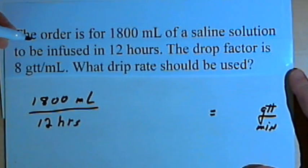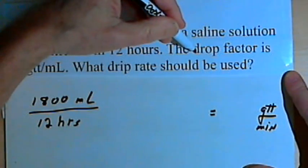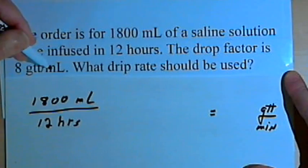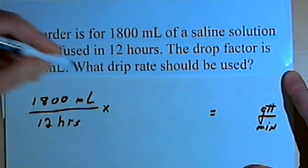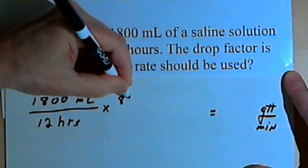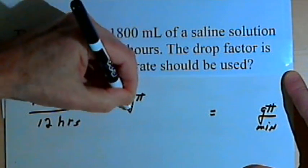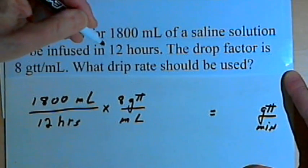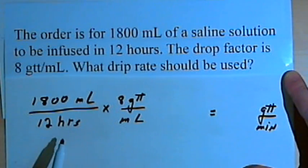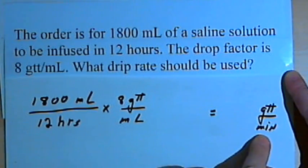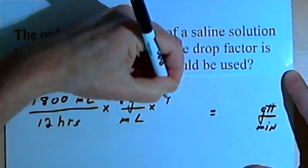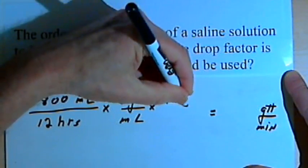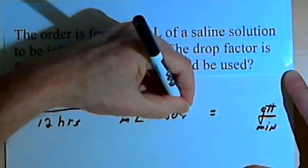The other information we're given is that the drop factor is 8 drops per milliliter. Let's put that fraction in next. We multiply the order by 8 gtt per milliliter. One more thing we have to do: since we've got hours and we want minutes, we'll use a fraction to convert that, 1 hour over 60 minutes.